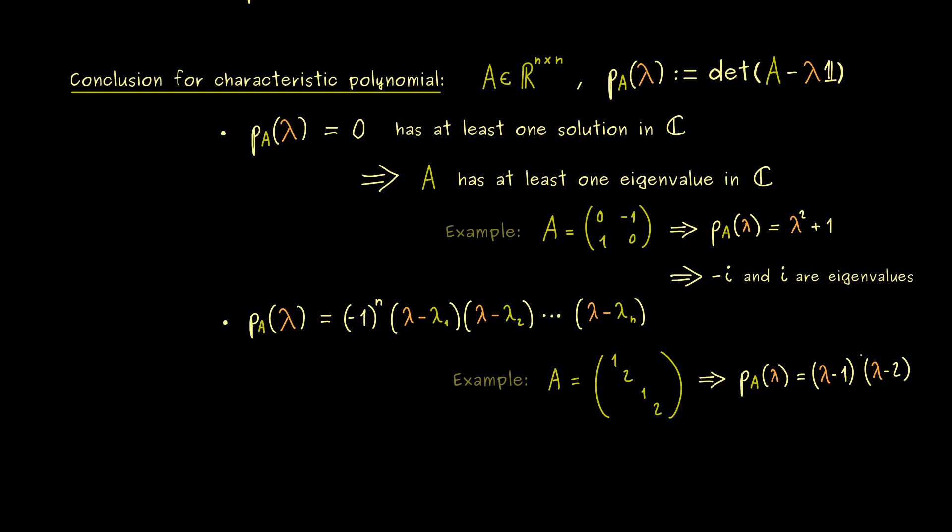Therefore we can simplify the thing with powers 2. Exactly this exponent now we call the algebraic multiplicity of the eigenvalue. So for example the eigenvalue 1 has the algebraic multiplicity of 2. And indeed here we have the same for the eigenvalue 2 as well.